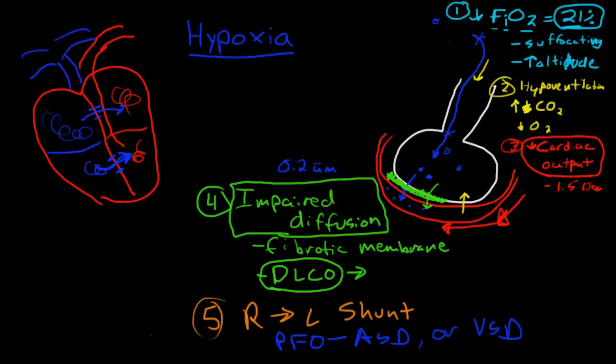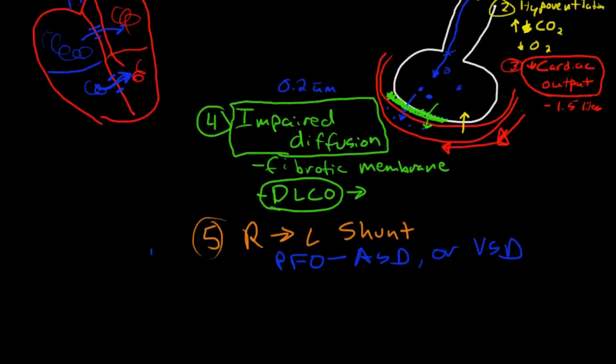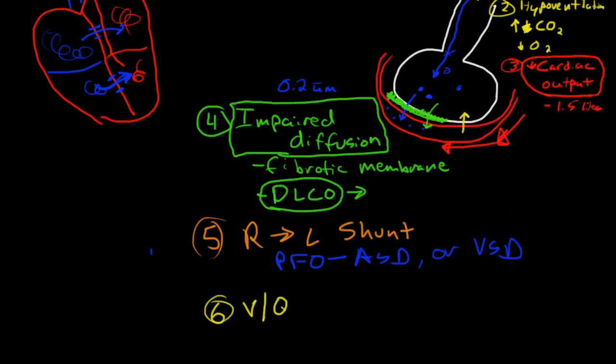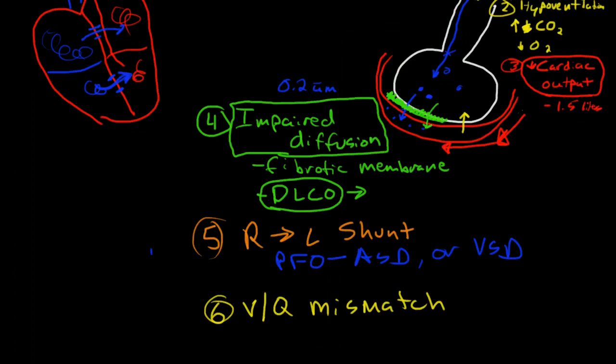Now, we can also have a physiologic shunt and this is the other name for a physiologic shunt is called a ventilation to perfusion mismatch or VQ mismatch. And we talked about this in another slide, VQ mismatch. And this just means that blood, because of some kind of disease, is passing unoxygenated alveoli.